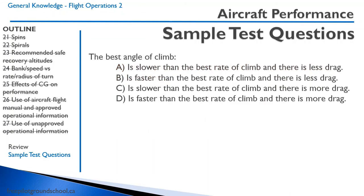Test question on the best angle of climb. The best angle of climb is closer to stall speed where there is a minimum amount of drag, and it is therefore slower than the best rate of climb. Answer: A.